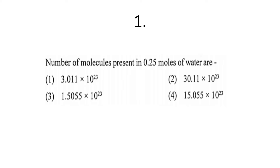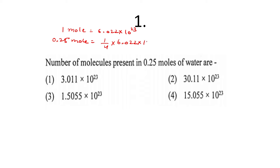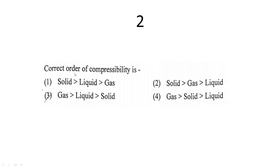The first question: find the number of molecules present in 0.25 moles of water. One mole contains 6.022 × 10²³ molecules. So 0.25 moles means 1/4 × 6.022 × 10²³, which gives 1.5055 × 10²³. So option three is correct.